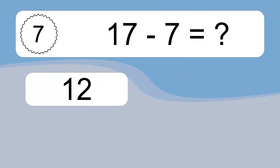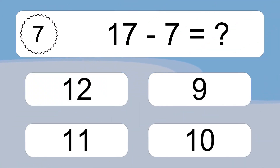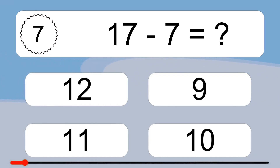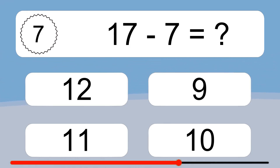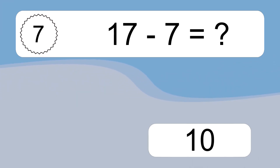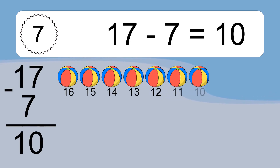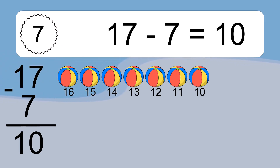17 minus 7 equals what? 17 minus 7 equals 10. Let's count it: 16, 15, 14, 13, 12, 11, 10.